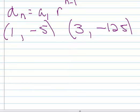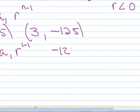So this is going to look just like the two-point method that we did back when we solved exponentials. So we're going to make two equations that use these two points. Negative 5 equals a sub 1 times r to the 1 minus 1, and negative 125 equals a sub 1 times r to the 3 minus 1.